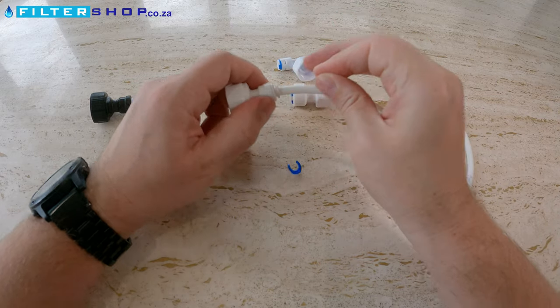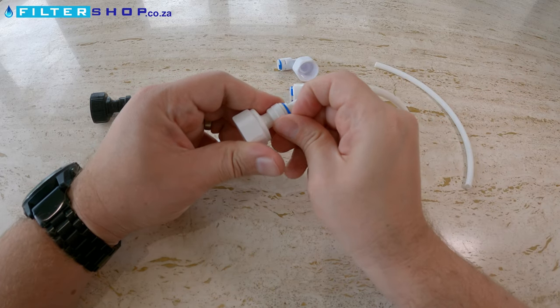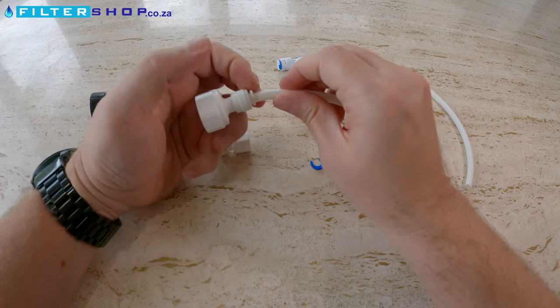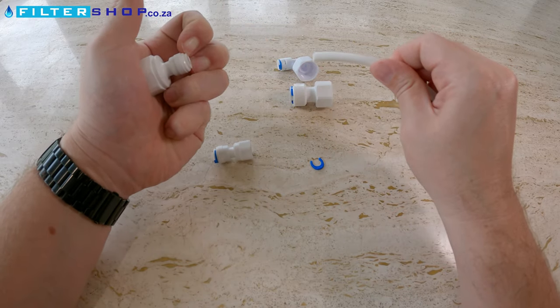Then you can replace the clip to lock it, and if you want to remove it you just remove the clip and then push the collar in against the fitting and then the pipe can be removed.